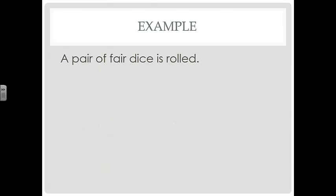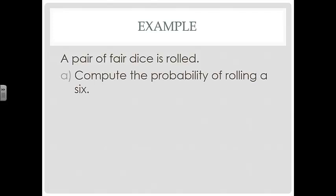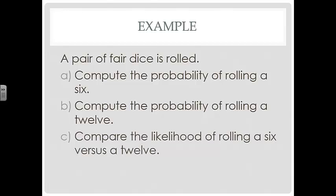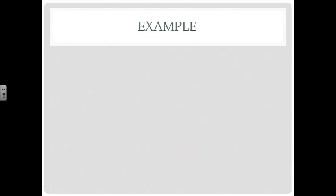So let's take a look at an example. A pair of fair dice is rolled. Compute the probability of rolling a 6. Compute the probability of rolling a 12. Compare the likelihood of rolling a 6 versus a 12. So the probability of rolling a 6 is 5 out of 36 because there are a total of 36 possible outcomes when you roll two dice.